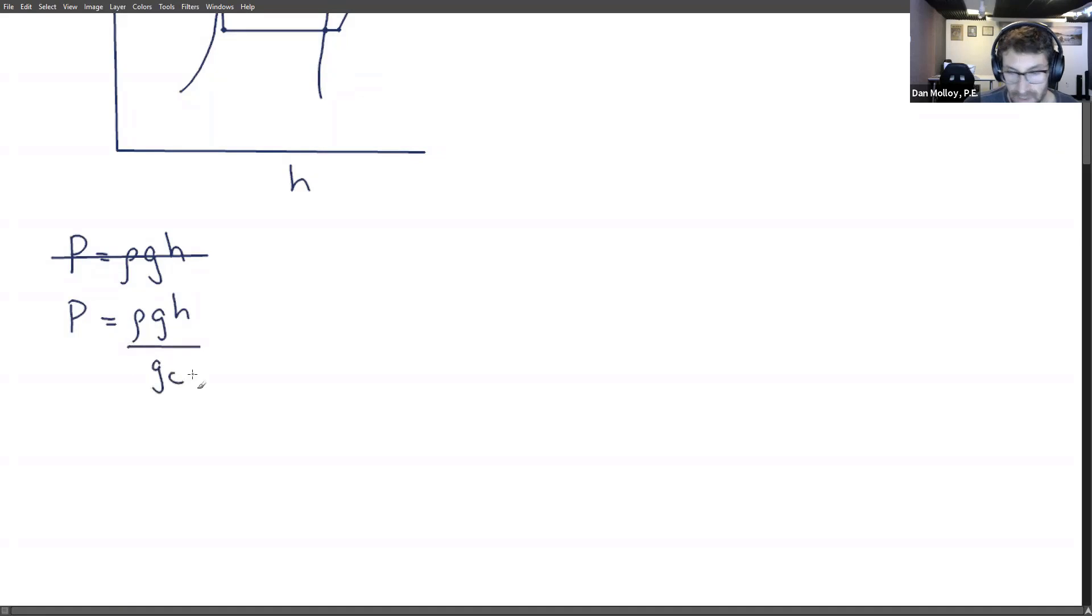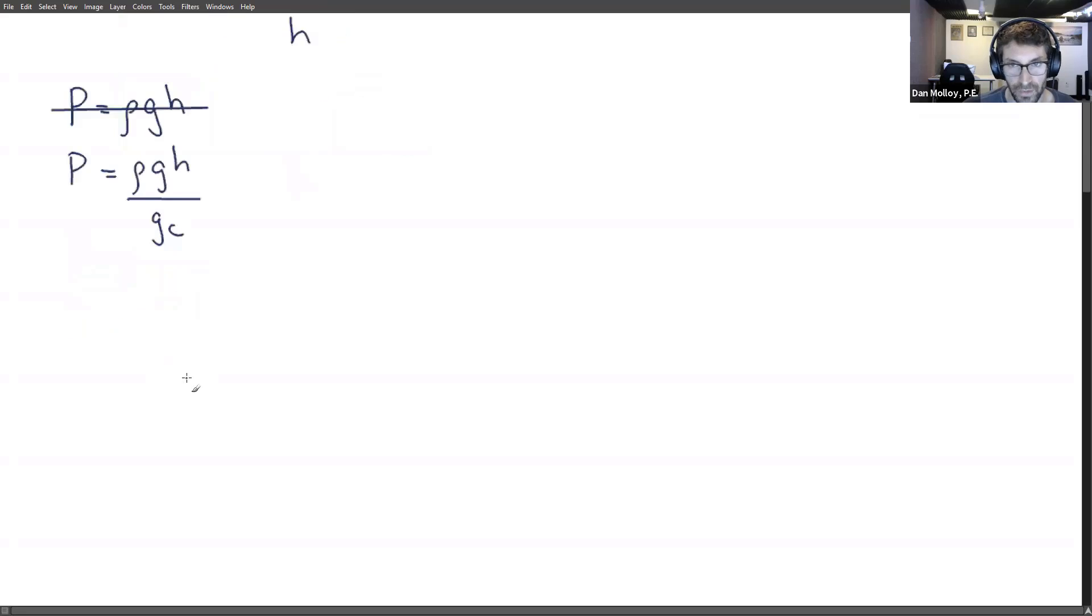But hopefully most of us have accepted this by now. All this does is account for going from pounds force, which would normally be in the acceleration due to gravity, to pounds mass. And the units of G sub C are just what they need to be to make that happen. So what are these different parameters? Let's just make sure we're covering the definitions here.